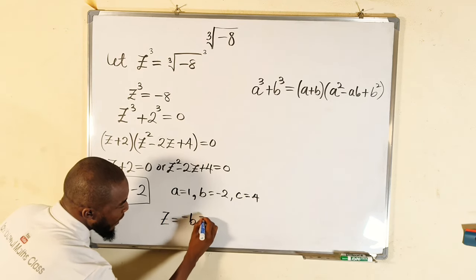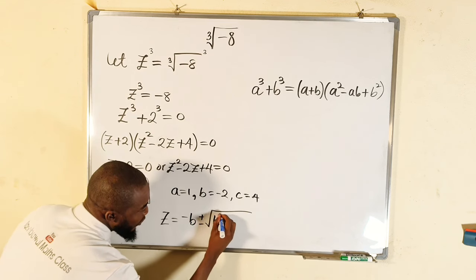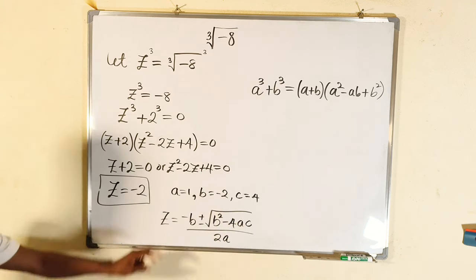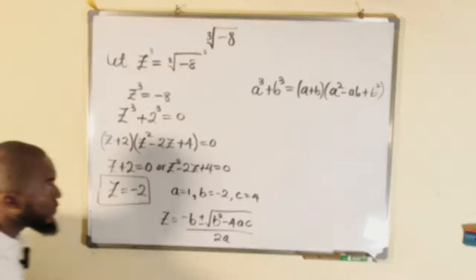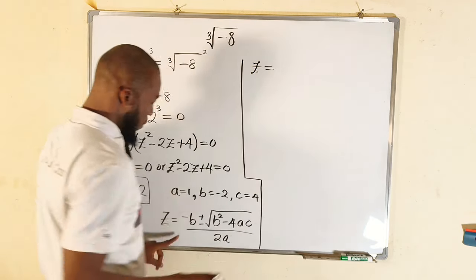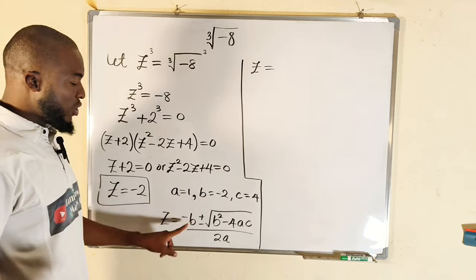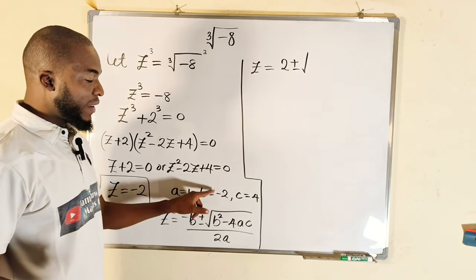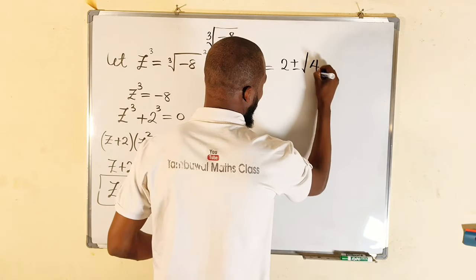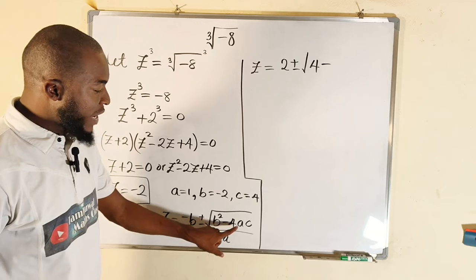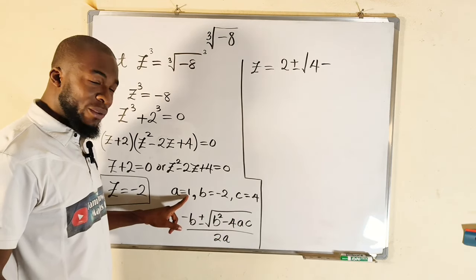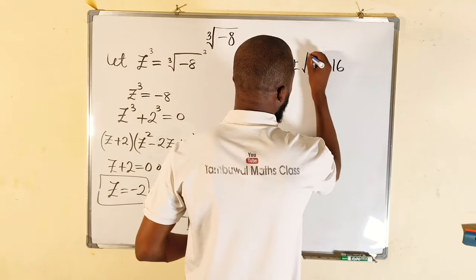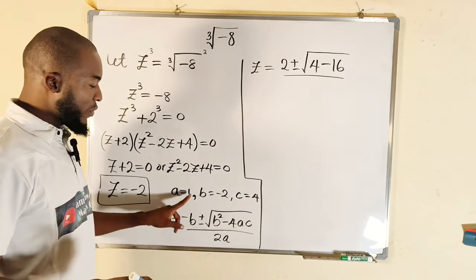The formula is z = (−b ± √(b² − 4ac)) / (2a). Substituting: −b gives us positive 2; b² gives negative two squared which is 4; then 4 × a × c is 4 × 1 × 4 = 16; and the denominator is 2 × 1 = 2.